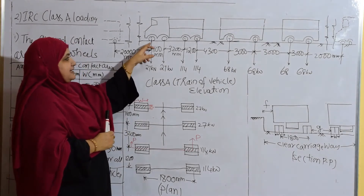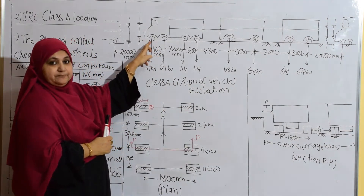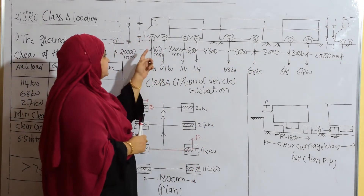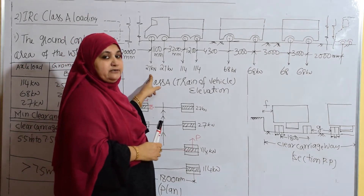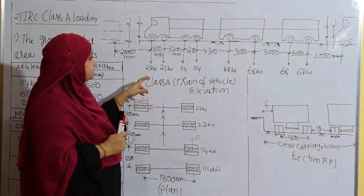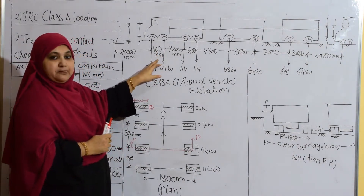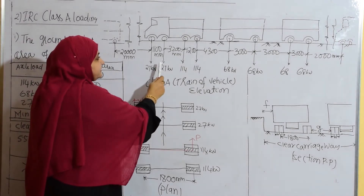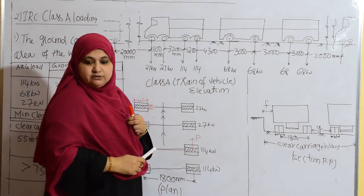This is the first axle of the Class A train of vehicles. The first axle carries a load of 27 kilonewton. It is in kilonewton, whereas in IRC 6 code you may find it as 2.7 ton — don't get confused, it is 27 kilonewton. The second axle is at a spacing of 1100 mm and also carries a load of 27 kilonewton. The third axle is at a distance of 3200 mm and carries a load of 114 kilonewton.